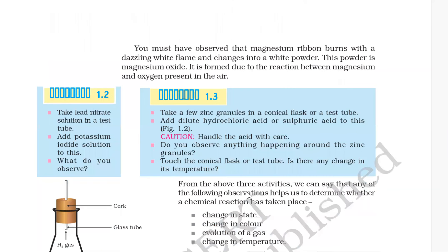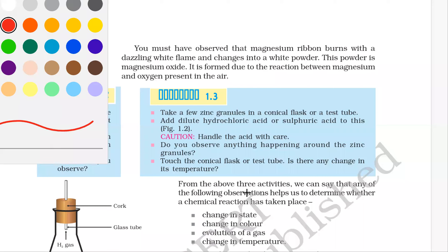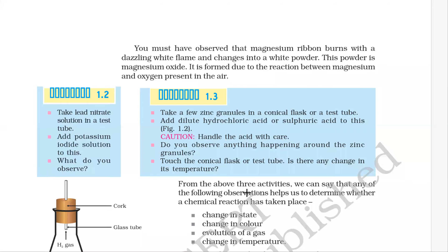You must have observed that magnesium ribbon burns with a dazzling white flame and changes into white powder. This white powder is magnesium oxide, formed due to the reaction between magnesium and oxygen present in air.